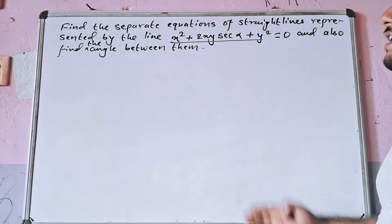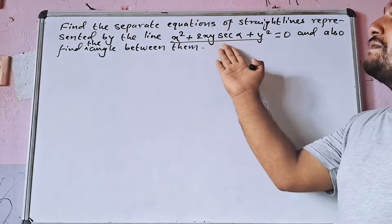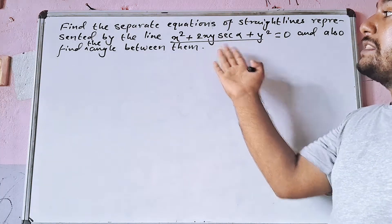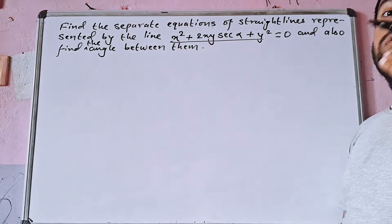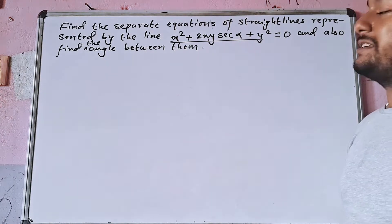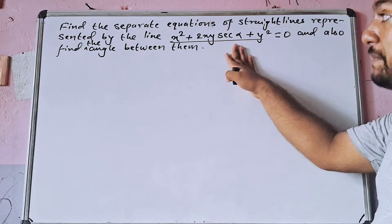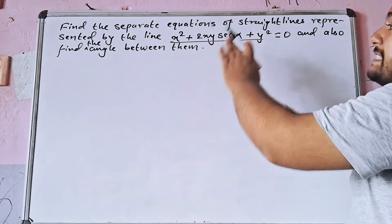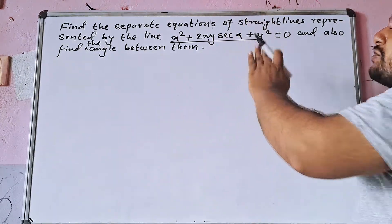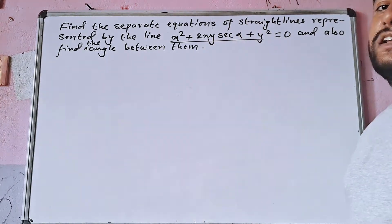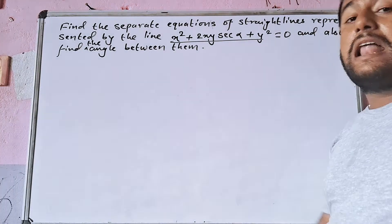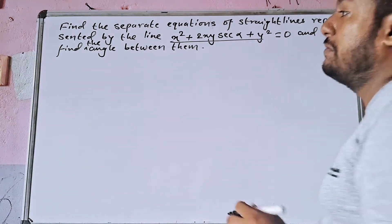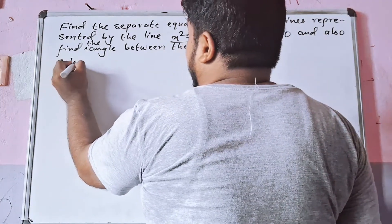This is a single equation representing a pair of straight lines. We need to find the separate equations. This is not just any pair equation — you can also find the angle between them.